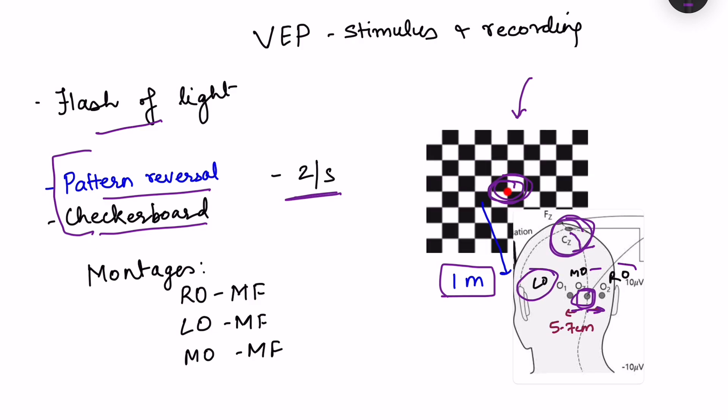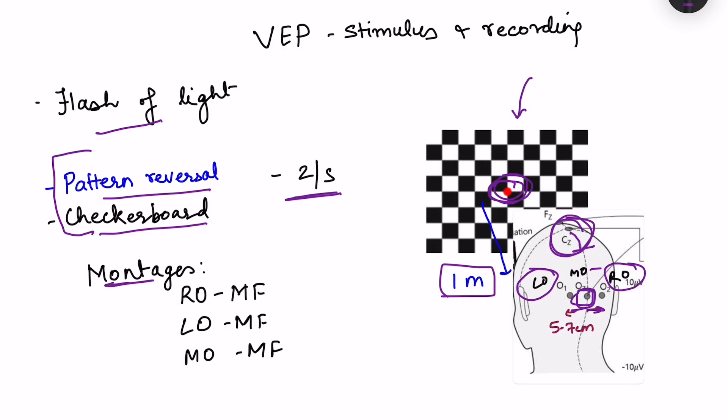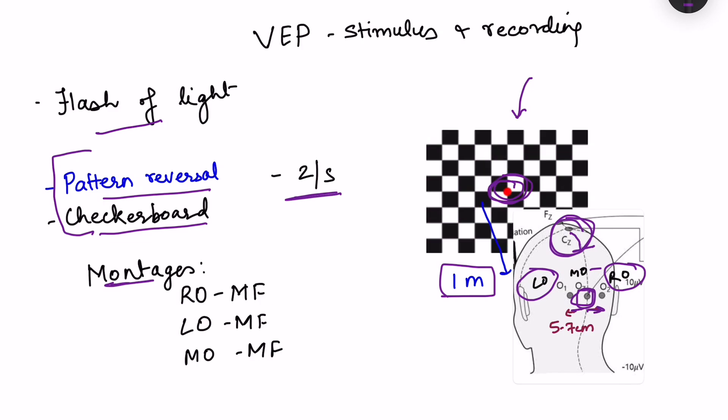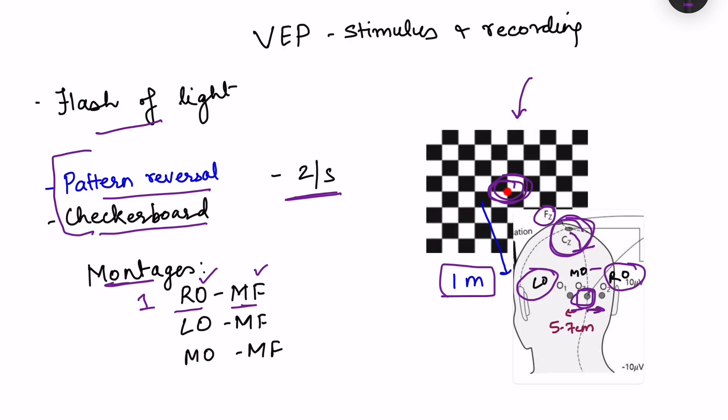So we have left occipital recording, right occipital recording, and then we create montages. Montages is basically the combination of the electrodes which are recorded. So right occipital with mid frontal, that is frontal is the FZ electrode. This FZ electrode is placed in the frontal region. So we see the potential difference recording between the right occipital electrode and the mid frontal electrode. This is known as one montage. Then we see the potential difference between the left occipital electrode and MF electrode, mid frontal electrode. And then third montage is midline occipital, that is the OZ electrode and the mid frontal electrode. So with the stimulation, EEG recording is seen in these three montages.